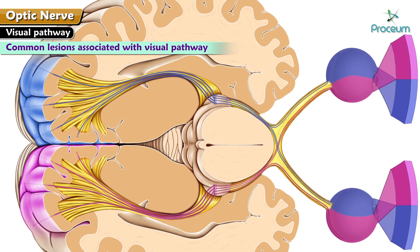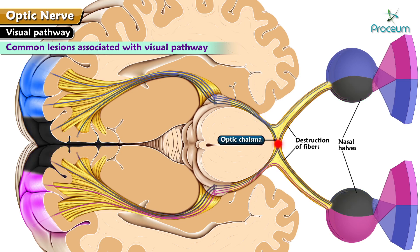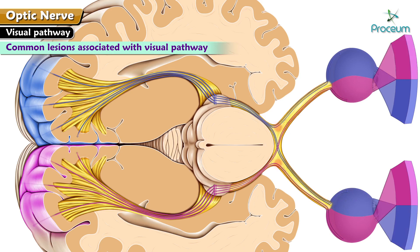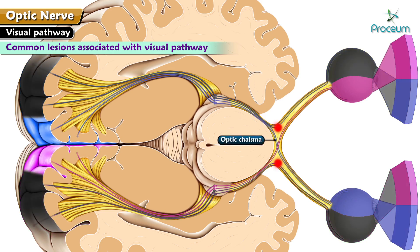Common lesions associated with the visual pathway: lesions involving the central part of the optic chiasma result in destruction of fibers from both nasal halves of the retina, causing bitemporal hemianopia. This may result from compression of the optic chiasma by a pituitary tumor. Lesions involving the lateral parts of the optic chiasma cause binasal hemianopia, as the fibers from the temporal halves of the retina are affected.